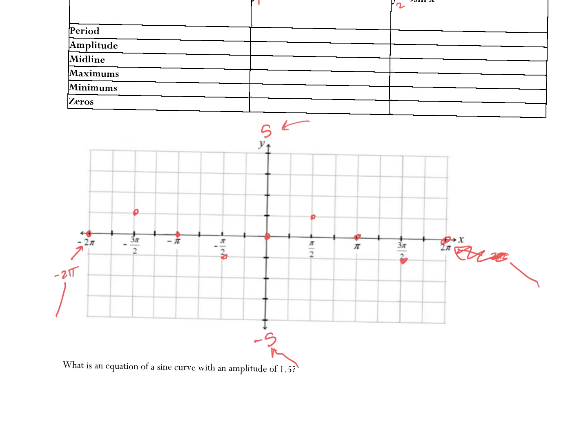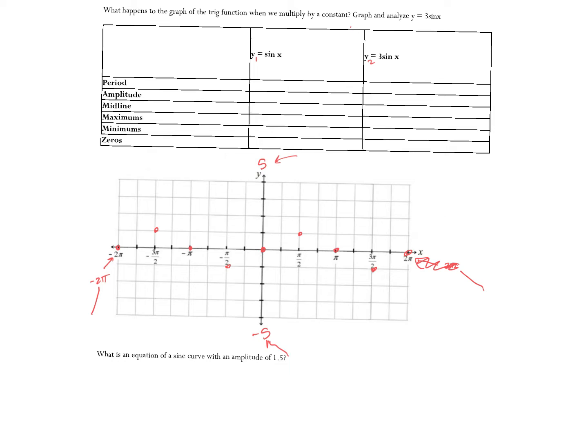In your calculators, we've got y1, y2. For your x min, that'll be negative 2π, your x max will be positive 2π. Your y min will be negative 5, your y max will be positive 5. That's all you really need to do. Don't change anything else.